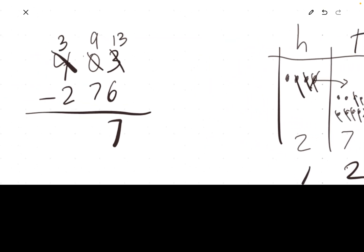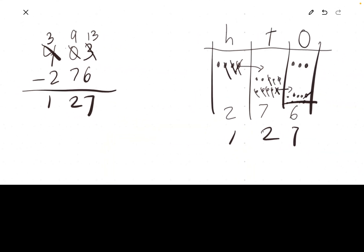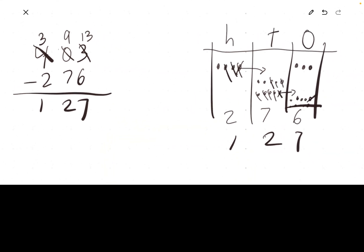Over here with the numbers, 9 minus 7 is 2, and 3 minus 2 is 1. This method is also really helpful for kids who are still struggling to learn their subtraction facts for 20 and down, because you don't have to think about what's 13 minus 6. You just cross it out and count what's left.